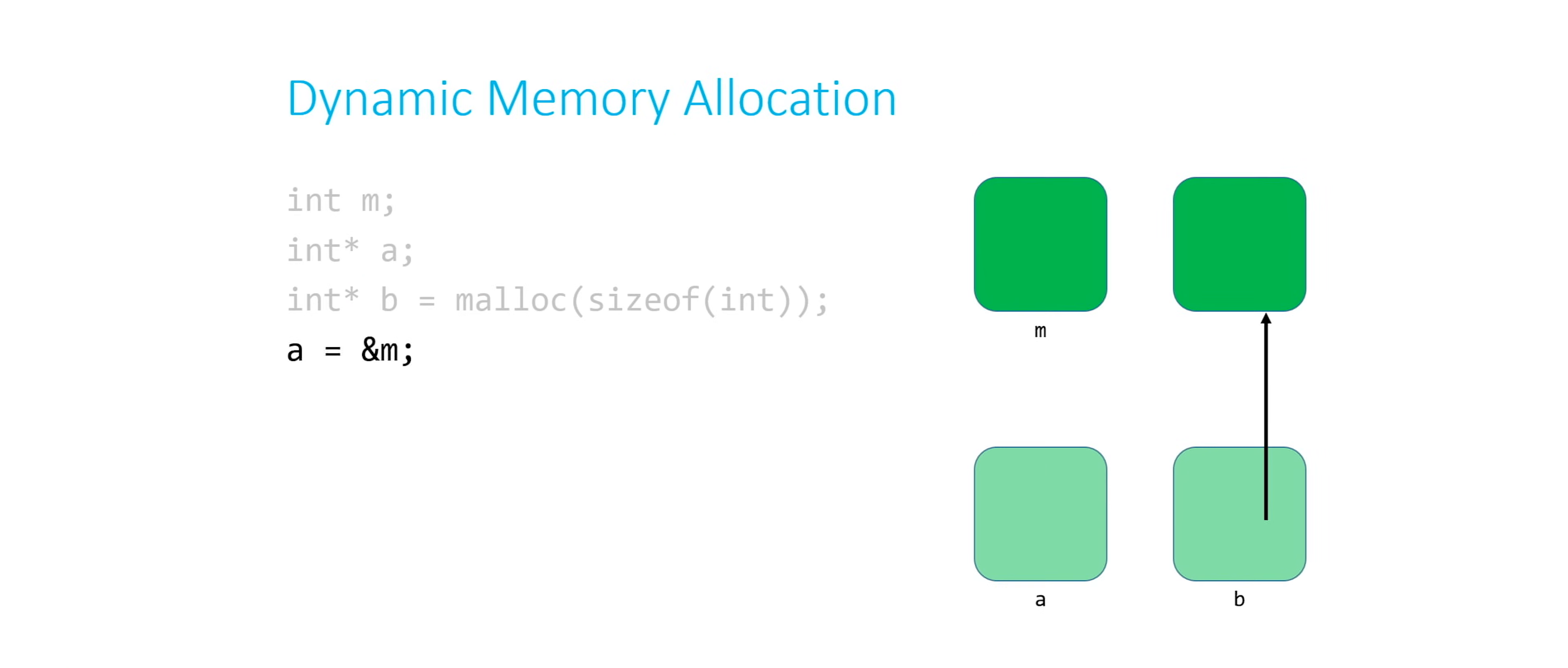If you recall from our video on pointers, basically, this just means a points to m. So that just creates this arrow here. Next up, let's say a equals b.